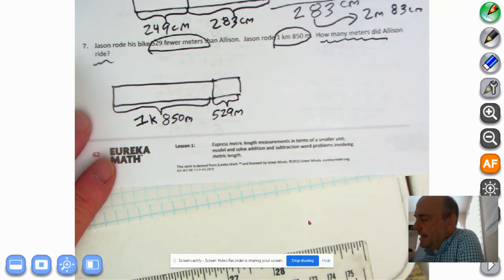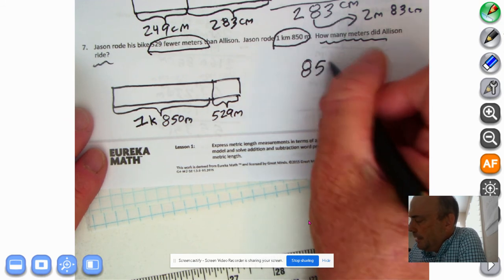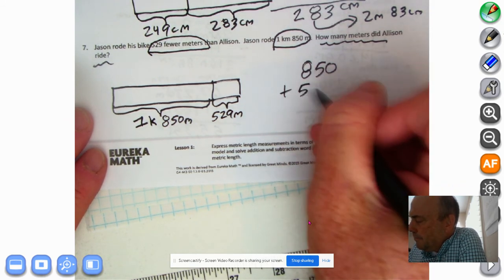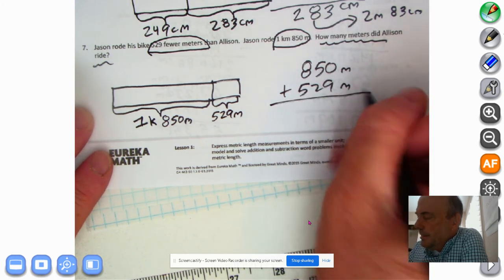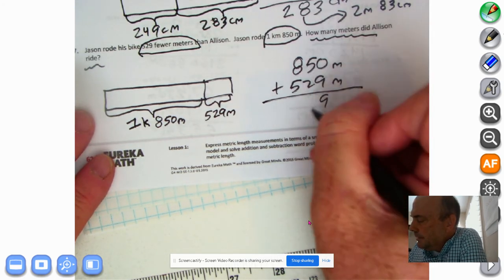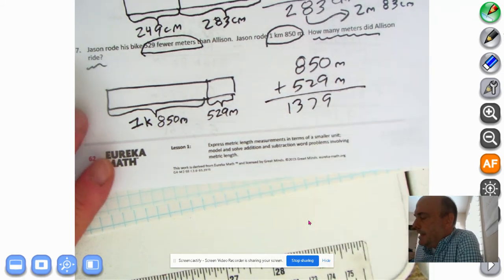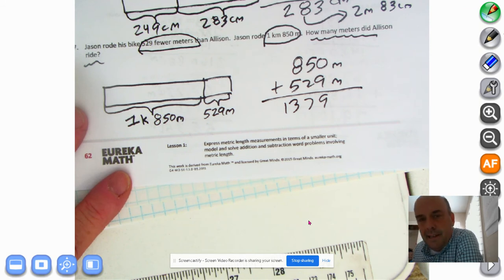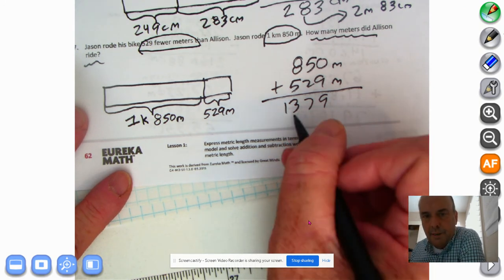All we got to do is add. And the way I'm going to add is I'm going to add the meters first. Simplifying strategy. I think you'll see why. 0 plus 9, 9. 5 plus 2, 7. 8 plus 5 is 13. So, look, now I can say, okay, I get it. There's 1,000 meters in a kilometer, right?